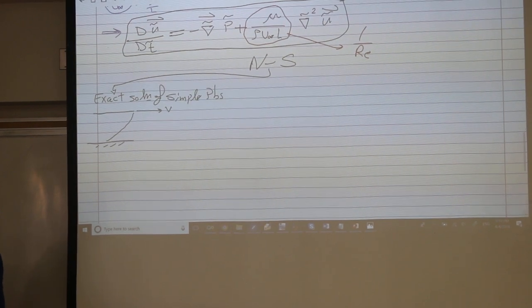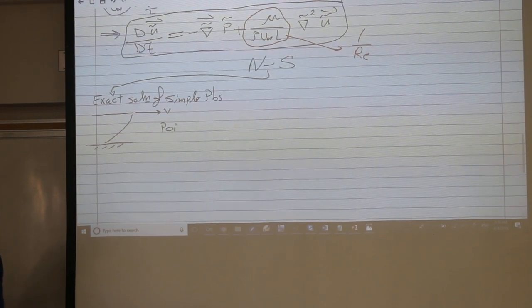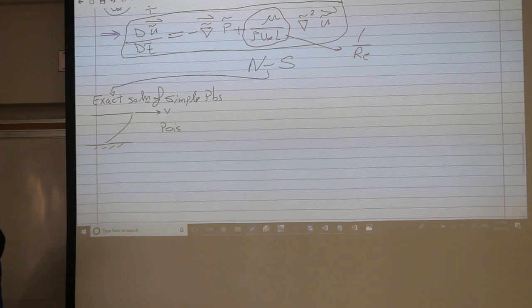Your velocity profile looks like this. This is the Poiseuille flow. Now it's, I guess it's another S-E-U-I-L-L, something like this. Poiseuille flow. We can solve this exactly, we can solve the full Navier-Stokes equations exactly.